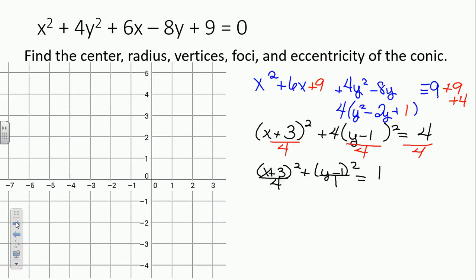The center of our ellipse is negative 3, 1. We start by plotting that — 3 back, 1 up. Now we have the form x minus h squared over something squared plus y minus k squared over something else squared equals 1. The a squared is 4, so a is 2. The b squared is 1, so b is 1.